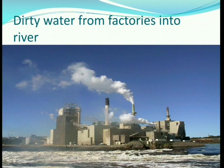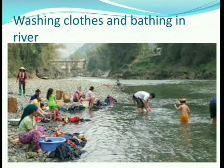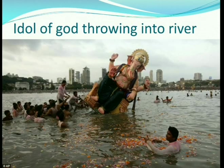The dirty water that comes out of factories has many harmful chemicals. The waste water from factories goes into rivers and lakes, making it dirty. Salt and other suspended solids such as soil washed off from the fields also makes the water dirty. Activities like bathing and washing clothes in rivers also make the water dirty. Religious activities like immersion of the ashes of the dead and the idol of gods in water makes the water dirty.